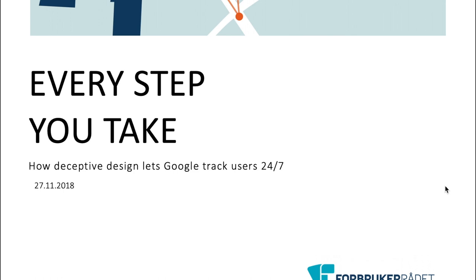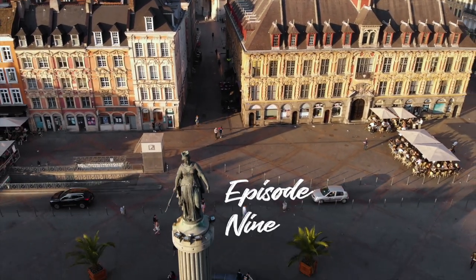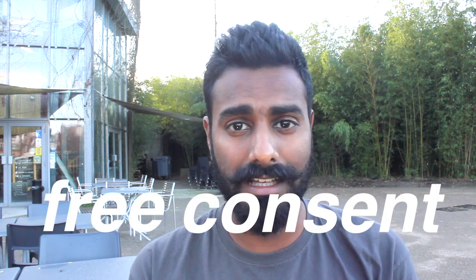Last week the Norwegian Consumer Council filed a report called 'Every Step You Take.' The report is against Google, complaining that Google is violating European privacy laws. Since then, six other European nations have joined this appeal to the BEUC, which is a collection of 43 consumer councils across Europe. Looking at the report, they seem to be complaining about one central issue: how do you measure free consent.